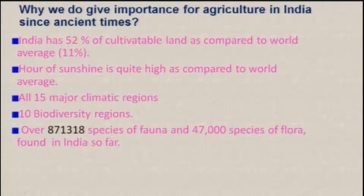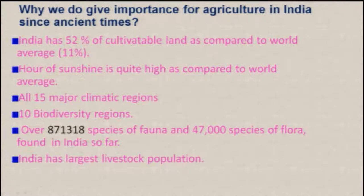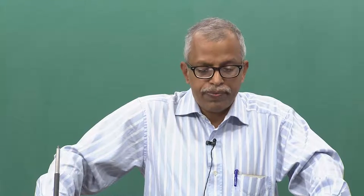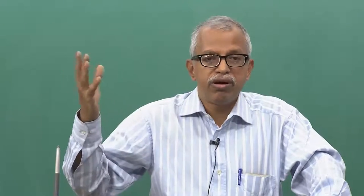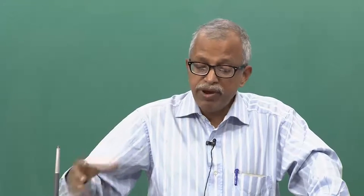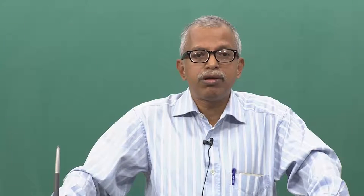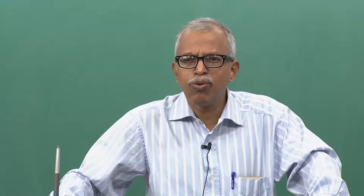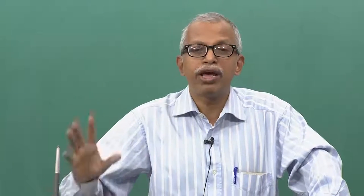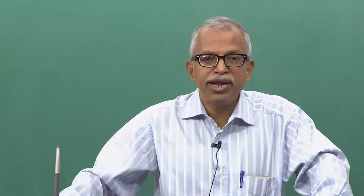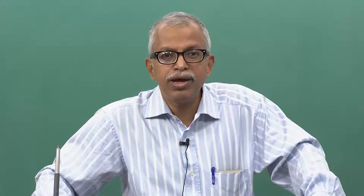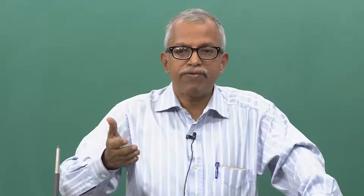Similarly, 47,000 species of flora are found in India, and there may be much more. India also has the largest livestock populations, which is quite good for our needs of milk and other food. I will tell you later why we need to rear animals — it is very important. Why do we need livestock? Why not use machines like tractors and trailers instead?